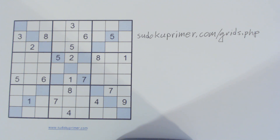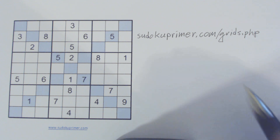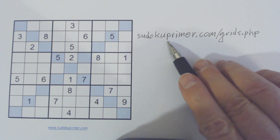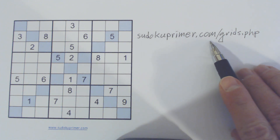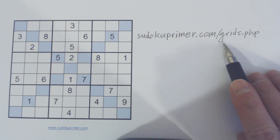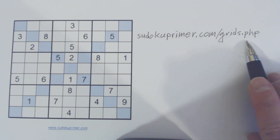This puzzle was sent to me in a comment by Doug Melvin, and I thought I'd take a look at it and do a video to show you how a diagonal Sudoku works. This puzzle was printed using an Excel spreadsheet that's available for you to download.